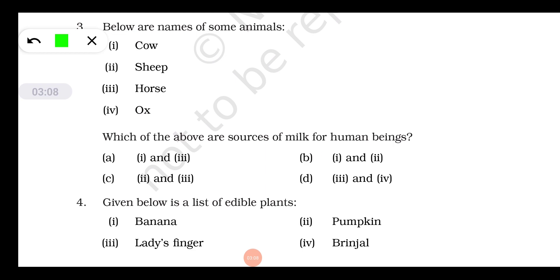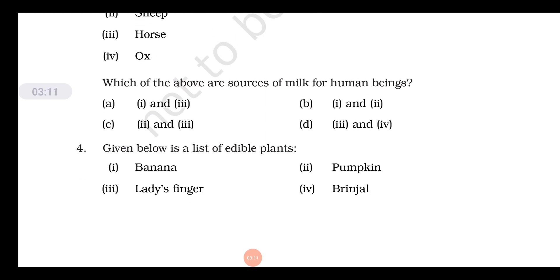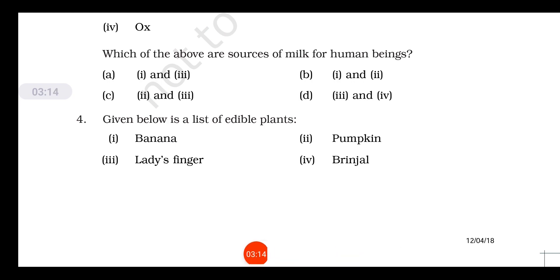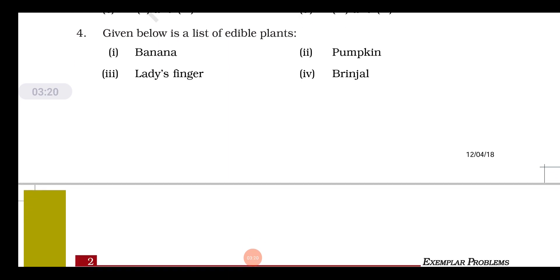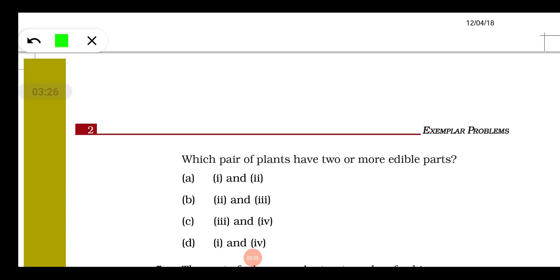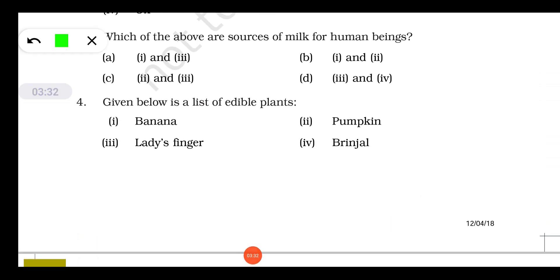Question number four: given below is a list of edible plants. This question was new to me. Banana, pumpkin, ladyfinger, and brinjal. Which pair of plants have two or more edible parts? We know that we eat banana as fruit, but its stem as well as flower is used as food. This was new information. Pumpkin - we know that its fruit is used as a vegetable, but its flower is also used as food.